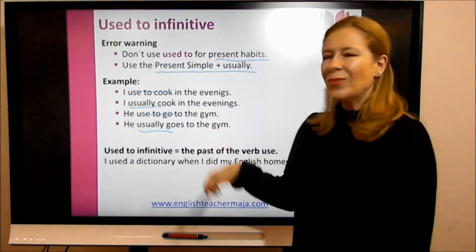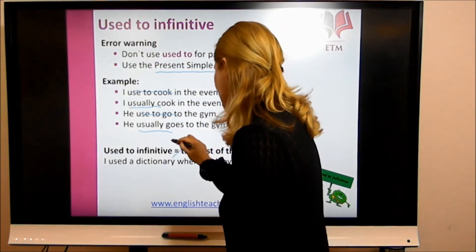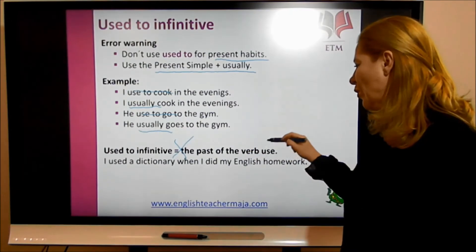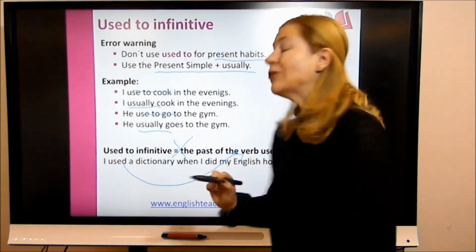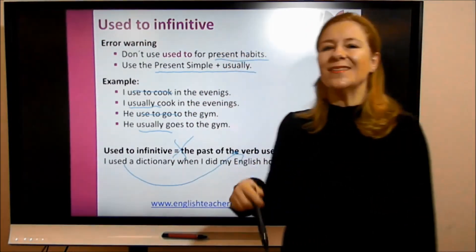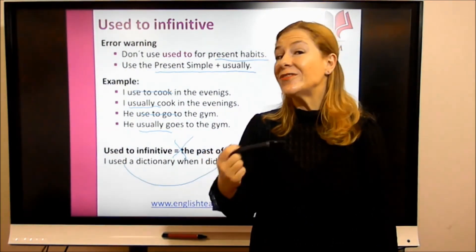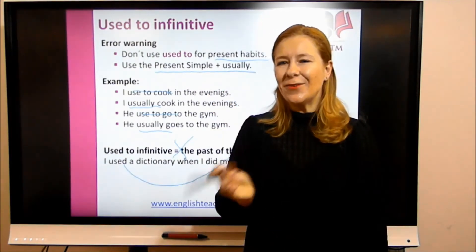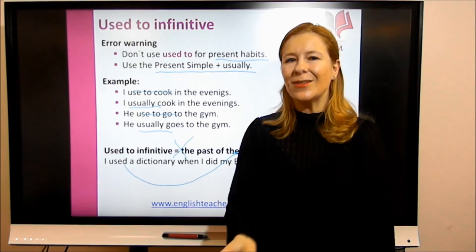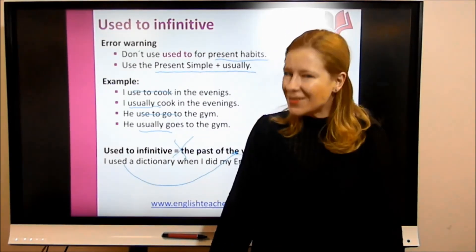Now a final question: is 'used to' plus infinitive the same as the past of the verb 'use'? The answer is no. For example: 'I used a dictionary when I did my English homework' — that is the past of the verb 'use.' The pronunciation is also slightly different. The structure is 'used to,' while the verb 'use' in the past is simply 'used' with no infinitive following.